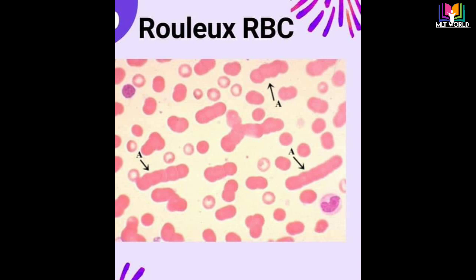Rouleaux are clumps of RBCs that look like stacked plates and usually form as a result of an abnormal quantity of certain proteins — immunoglobulin and fibrinogen — in the blood. Rouleaux are a non-specific indication for the presence of pathology. A normochromic normocytic anemia is often present with rouleaux formation, and there is high non-specific background staining on the blood smear due to the presence of circulating paraproteins.